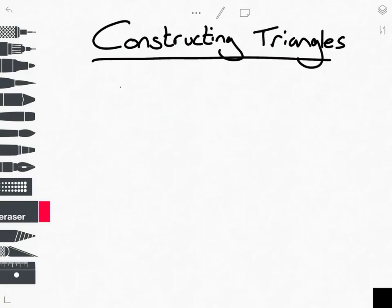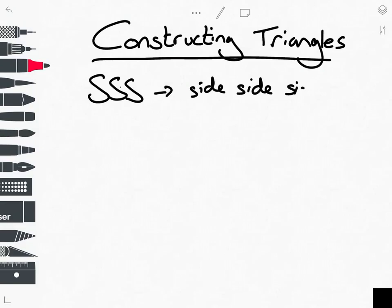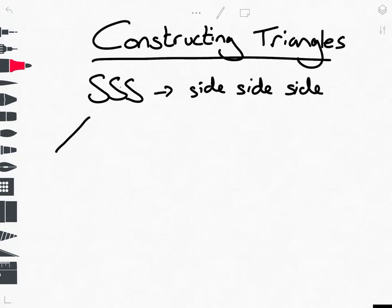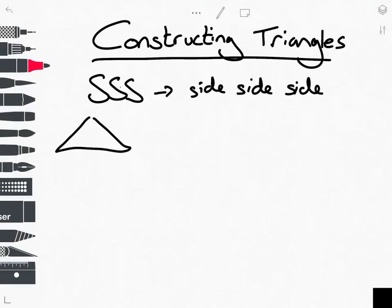And then, after all that, we get onto the constructing triangles, which you'll have done before. You should know how to construct four different types of triangle, but in this chapter, it only wants you to construct one, and we call it SSS, which stands for side, side, side, because they give you the three sides. So it might say construct this triangle and have six and seven and eight centimetres.